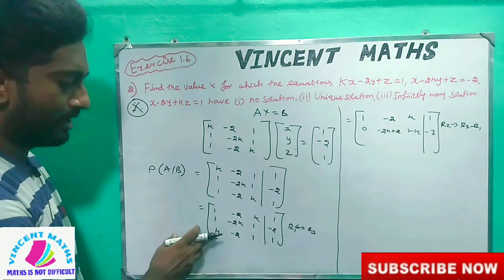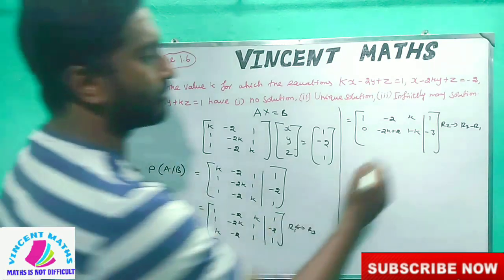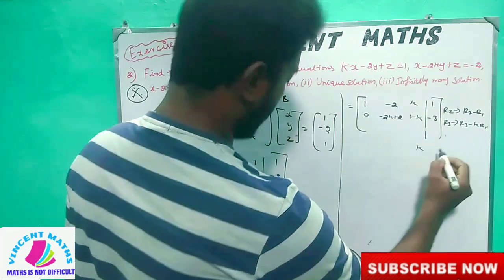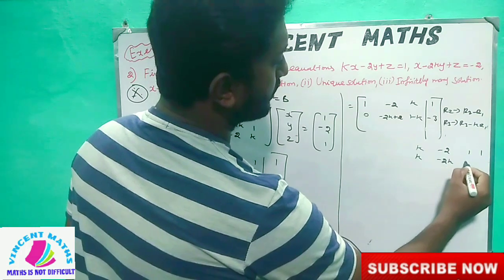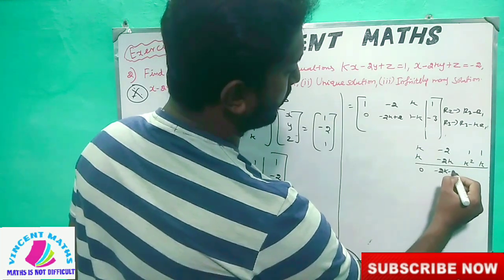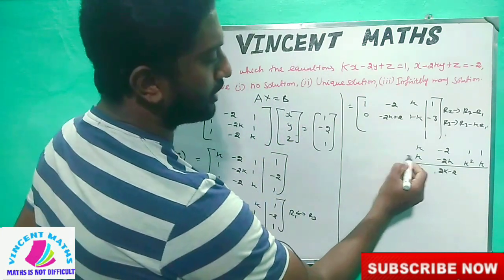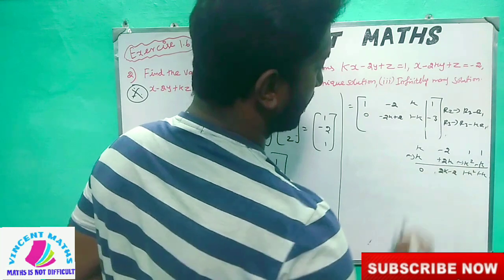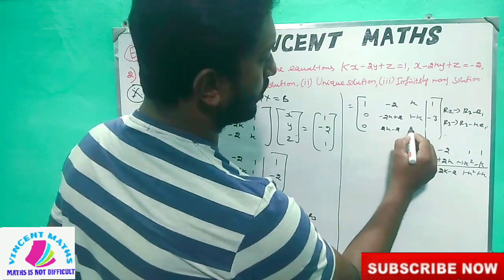Okay friends, what did we do next? We will get 0, and then we do R3 minus k times R1. So R3: k, minus 2, 1. R1 multiplied by k gives: k squared, minus 2k, k. What do we do? Minus 2k. The result is 1 minus k squared, 1 minus k squared.